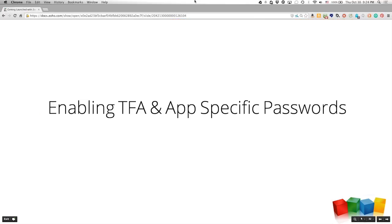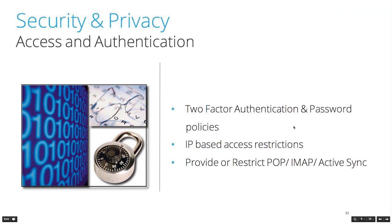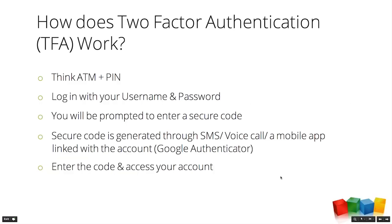Next, we're going to talk about two-factor authentication (TFA) and app-specific passwords. TFA is just another way to manage security and privacy. The easiest analogy: think of your ATM card and your PIN. If a thief steals your card, it isn't useful without your PIN. Similarly, for your inbox, not only do you need a username and password, but also a secure code generated via SMS, voice call, or a mobile app.